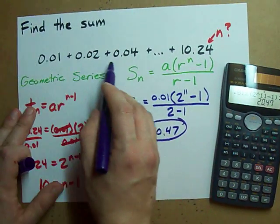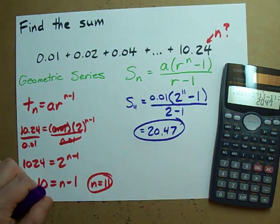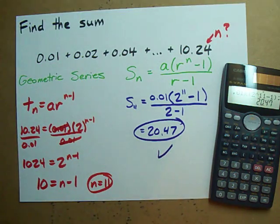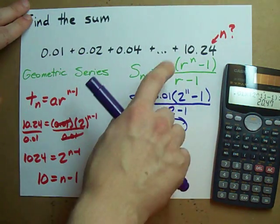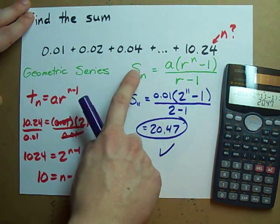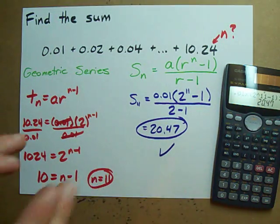So, the sum of all these terms together according to the formula is 20.47. Personally verify that that's true. Hopefully, you'll be able to do this yourself. The trick is to find the N that corresponds to your final term and use that in the formula for a geometric series. Best of luck!